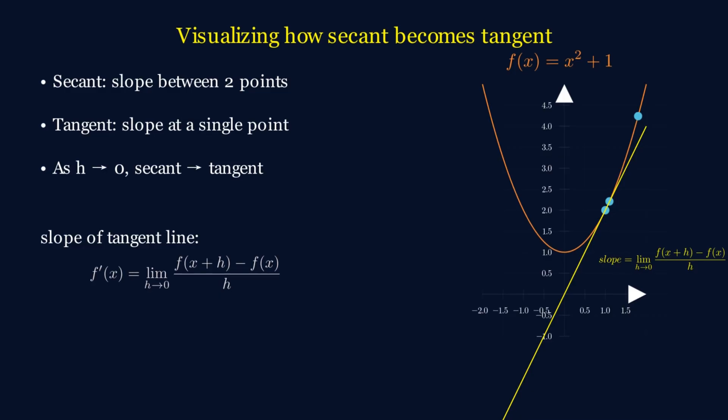So, the secant gives us the average rate of change between two points, and the tangent gives us the exact rate of change at one point. And in the next video, we're going to use this to find the equation of a tangent line.